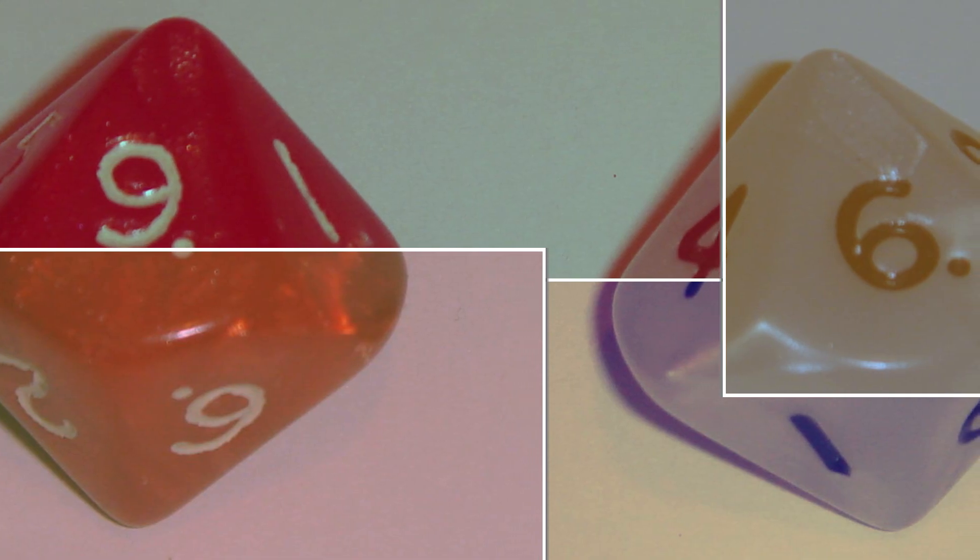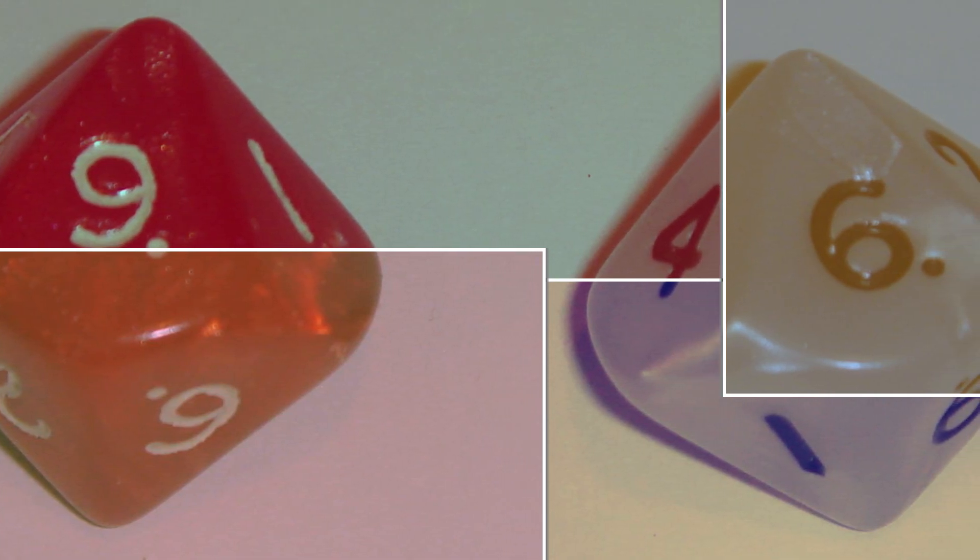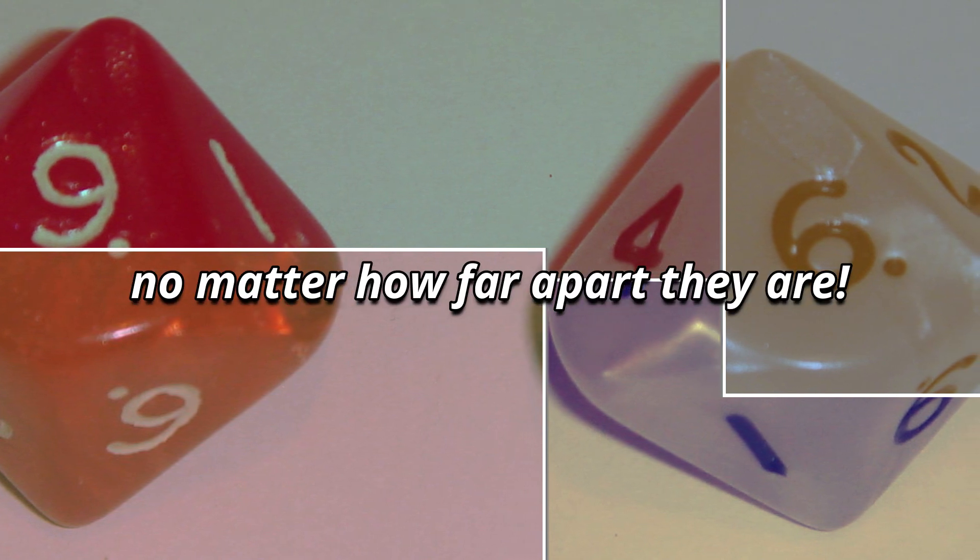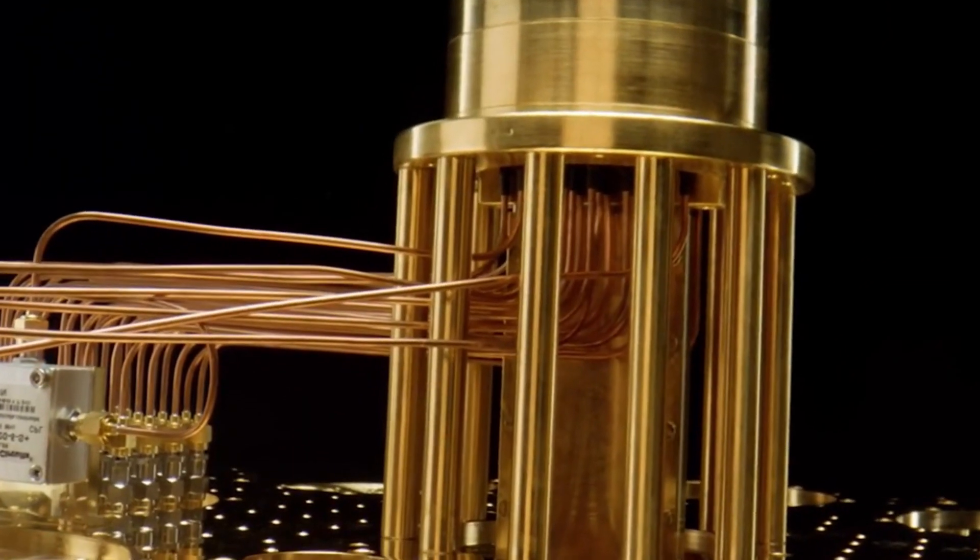Imagine having two entangled dice. When you roll them, if one comes up 6, the other instantly becomes a 6 too, no matter how far apart they are.